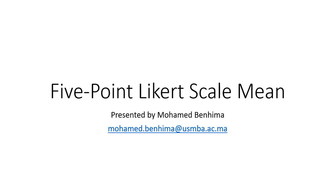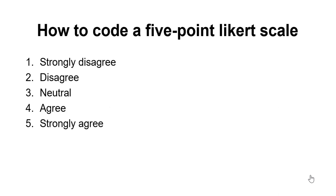Hello everyone, today I'm going to show you how to calculate the mean of a five-point Likert scale using SPSS. Before starting the calculation, I'd like to remind you of some main points. First, you have to code the five-point Likert scale: one corresponds to strongly disagree, two to disagree, three neutral, four agree, and five strongly agree. These values go from the lowest to the highest.